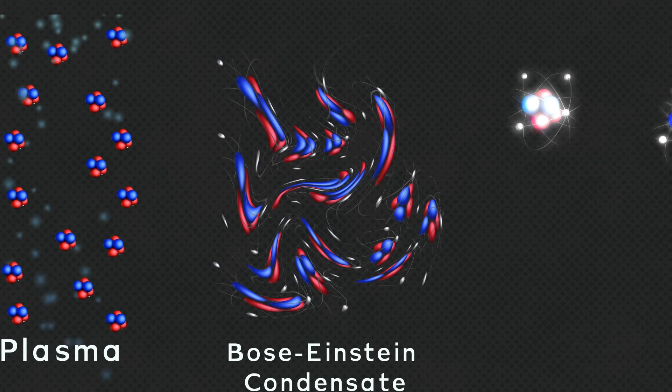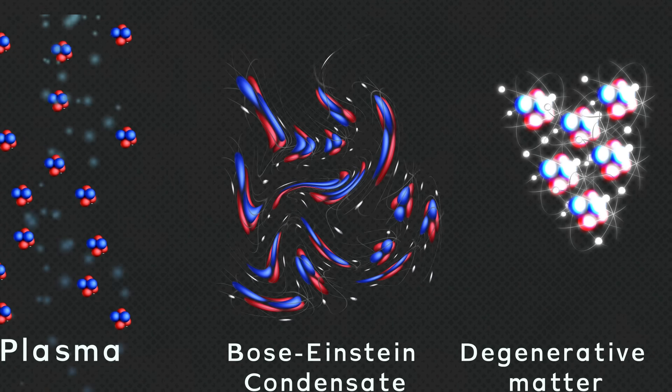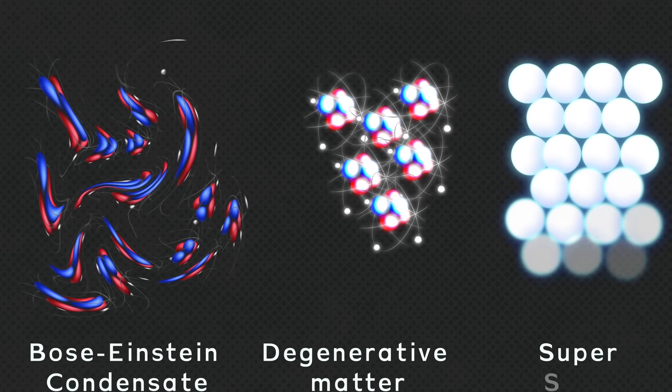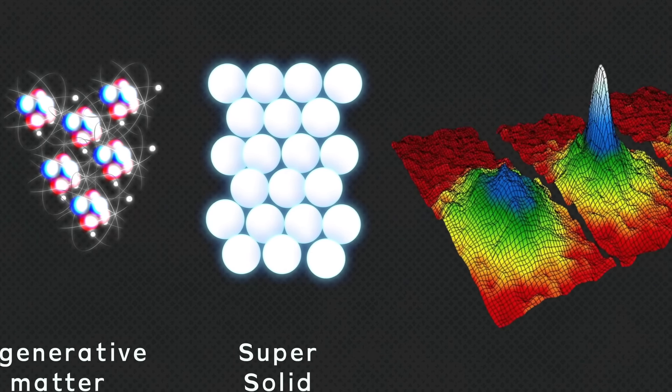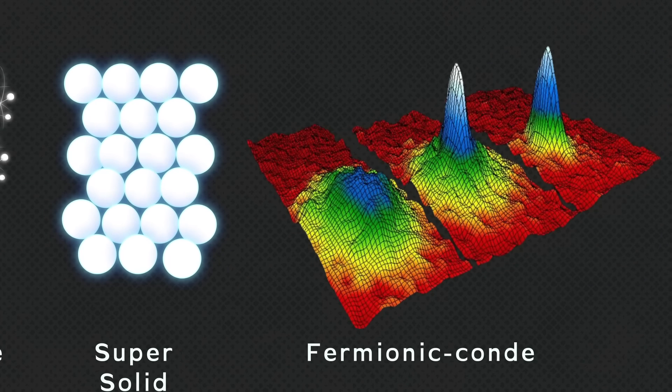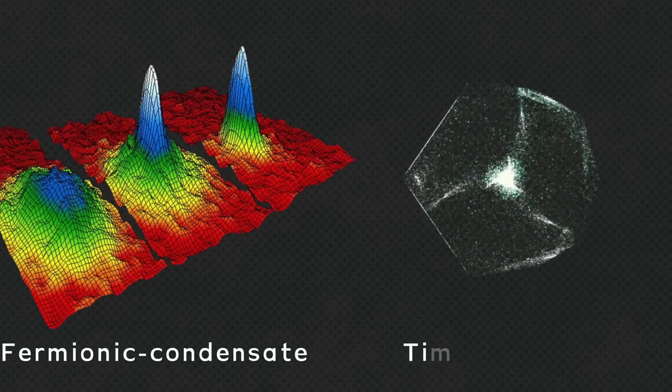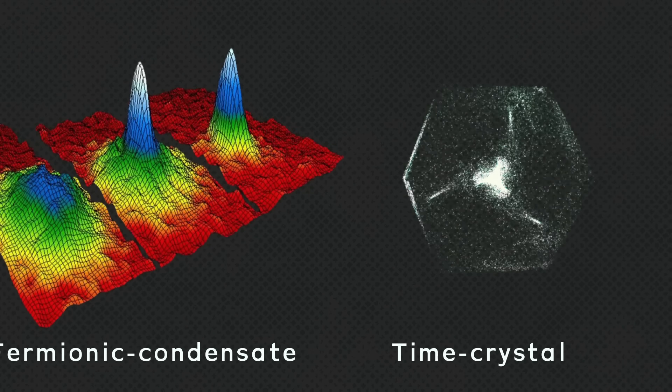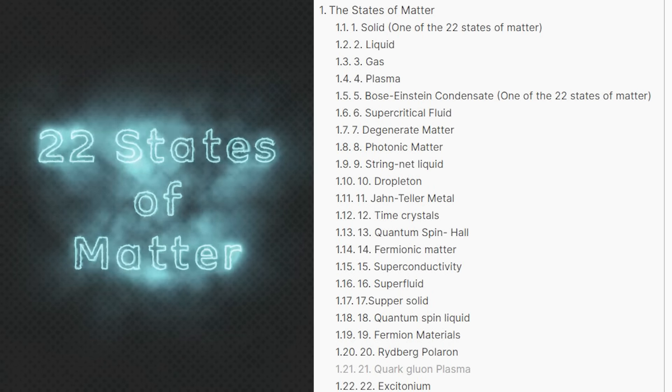Number 6: degenerative matter. Number 7: super solid. Number 8: fermionic condensate. Number 9: time crystal. And the list goes on and on. Schools में हमें बस तीन या ज़्यादा से ज़्यादा 4 states के बारे में ही पढ़ाया जाता है, लेकिन universe में total ऐसे 22 states of matter हैं।